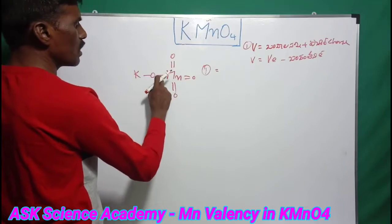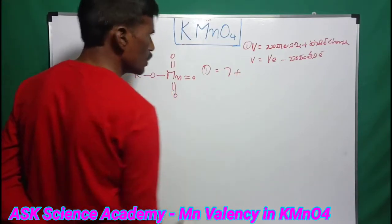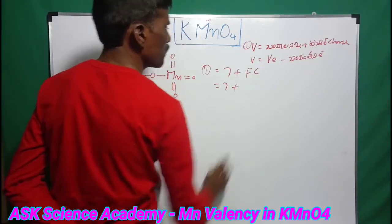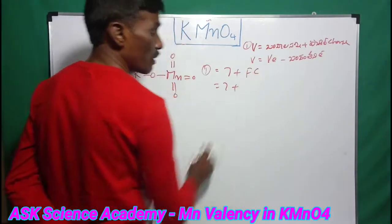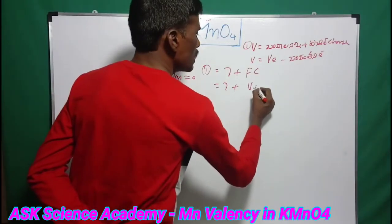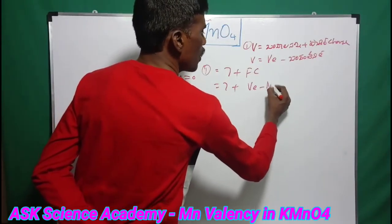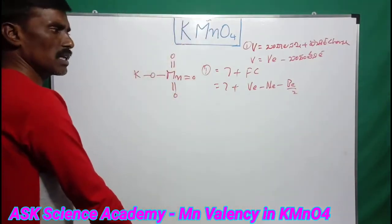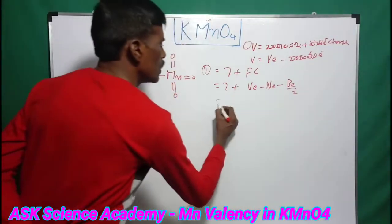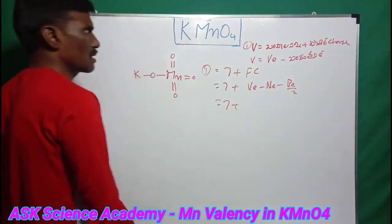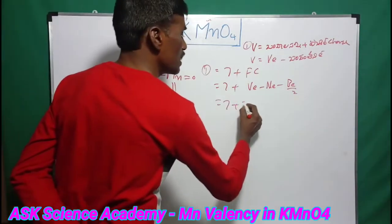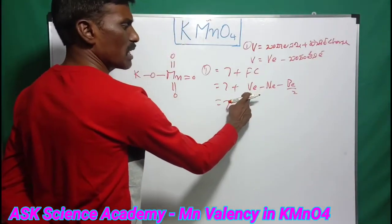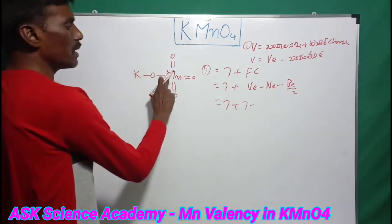Now applying the formal charge formula for manganese: manganese has 7 valence electrons. So valence electrons for manganese equals 7. Non-bonded electrons in manganese — since manganese is in a chemical bond, the non-bonded electrons are 0.